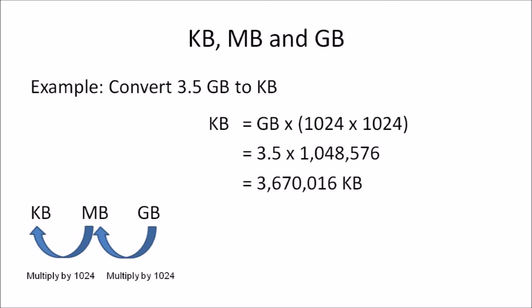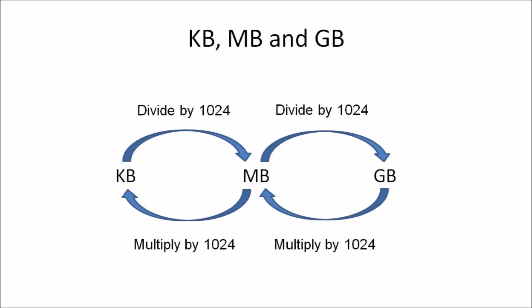Example 6: Convert 3.5 gigabytes to kilobytes. We convert gigabytes to megabytes, then megabytes to kilobytes, so we multiply by 1024 twice. The formula is: kilobytes = gigabytes × 1024 × 1024. Substituting: 3.5 × 1,048,576 = 3,670,016 kilobytes.